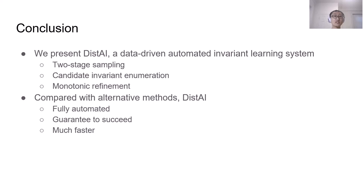In summary, we present DistAI, a data-driven automated invariant learning system, with two-stage sampling, candidate invariant enumeration, and monotonic refinement. Compared with alternative methods, DistAI is fully automated, guaranteed to succeed without existential quantifiers, and much faster in practice. Thank you for listening.